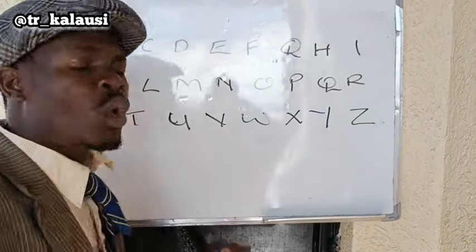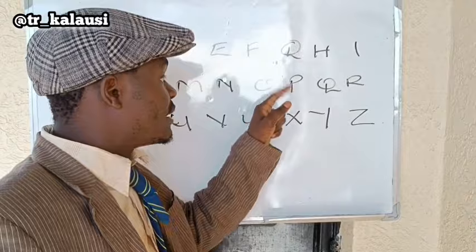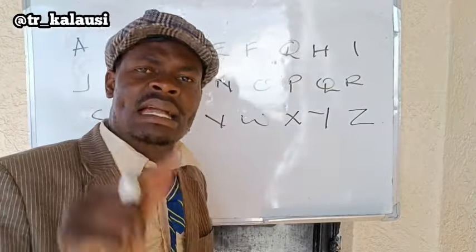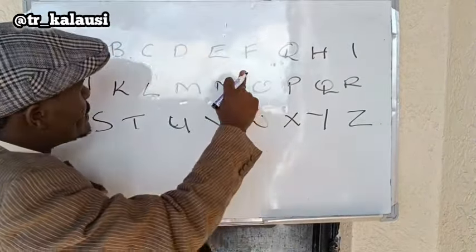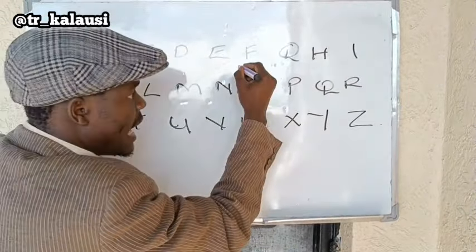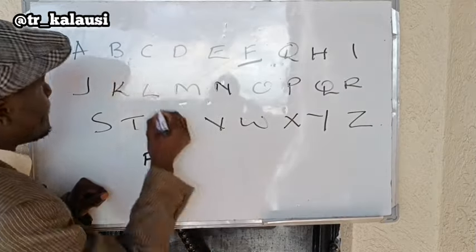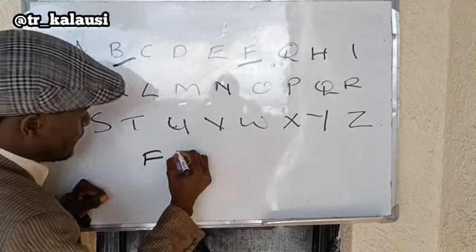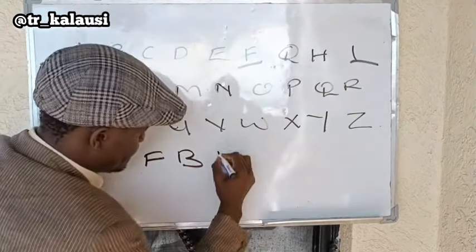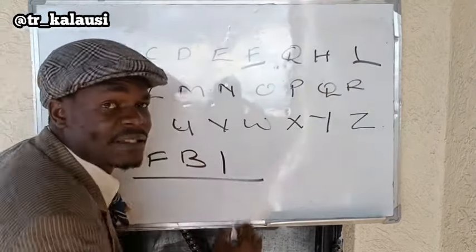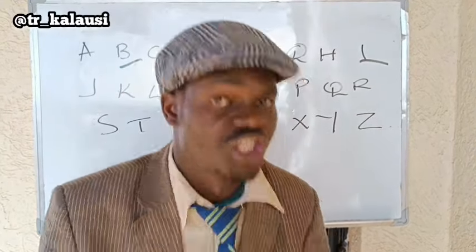Now pay attention. What are the three letters in the alphabet that frightens criminals? The three letters in the alphabet are F, B, I, which stands for Federal Bureau of Investigations.